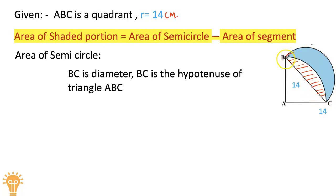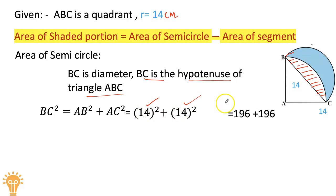We know BC is the diameter of the semicircle as well as the hypotenuse of triangle ABC. By the Pythagorean theorem, BC² = AB² + AC². So 14² + 14² gives 196 + 196 = 392.